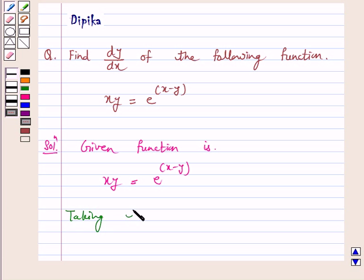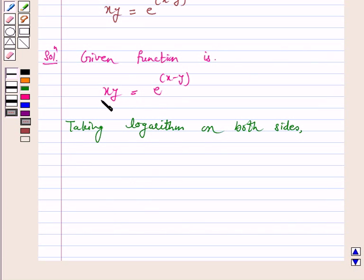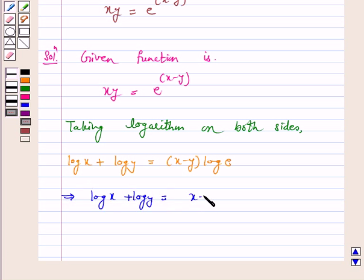we have log x plus log y equals (x minus y) log e. Now we know that log e equals 1, so this implies log x plus log y equals x minus y.